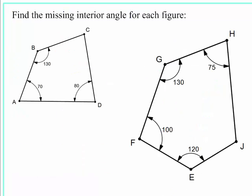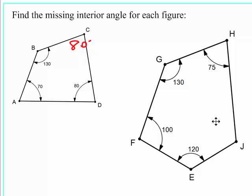Find the missing angle for each figure. The first figure has four sides, so the interior angles sum to 360. Take the three known interior angles and subtract from 360 — the missing angle is 80 degrees. The second figure has five sides, so the sum is 540. Subtract the four known angles from 540, and the missing angle is 115 degrees.